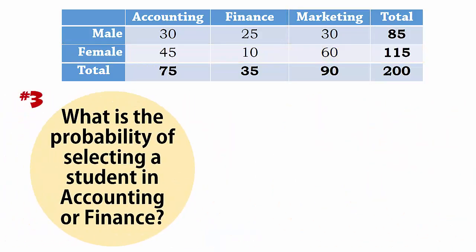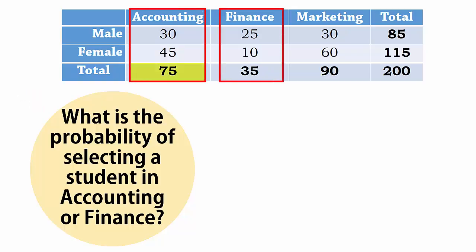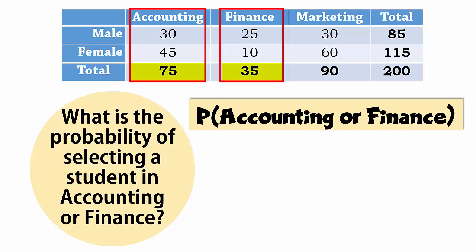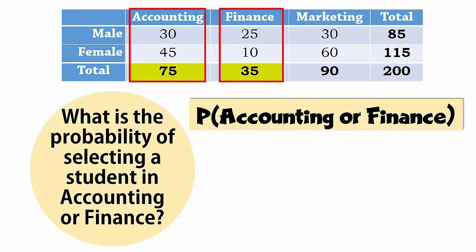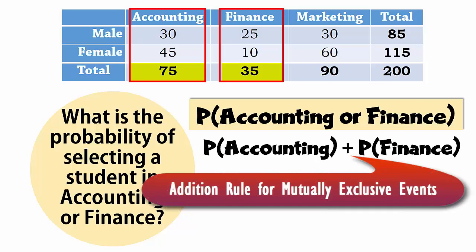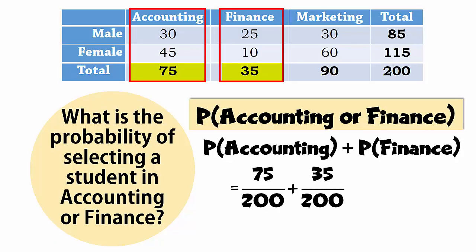Number 3: What is the probability of selecting a student in accounting or finance? Here we have 75 in accounting and 35 in finance. The probability can be found by simply adding the two values and dividing by 200. Or technically speaking, the two events accounting and finance are mutually exclusive — a student can major either in accounting or in finance, but not both. Therefore, the probability is 75 over 200 plus 35 over 200, which gives 110 over 200 or 0.55.